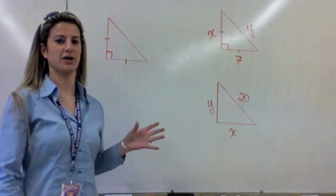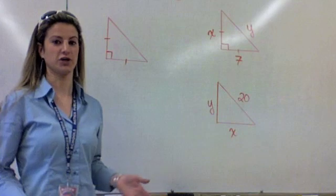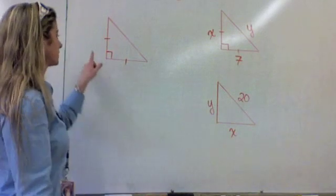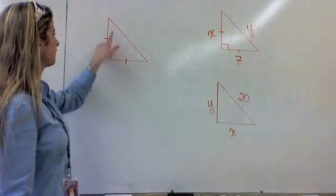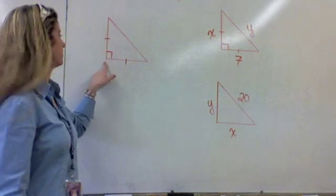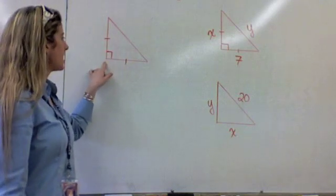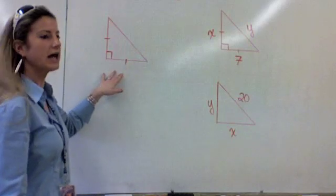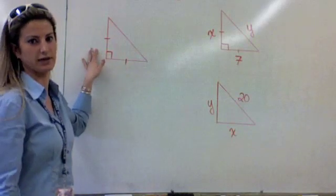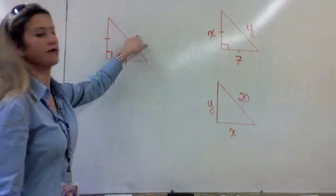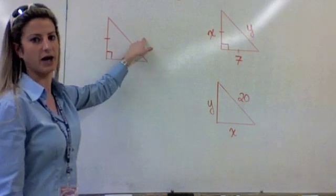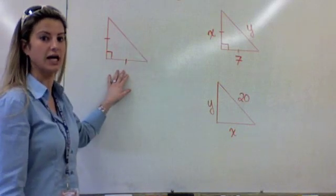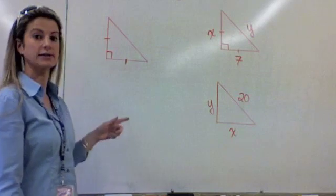Here's a little video to help you guys with the special right triangle tricks that we talked about in class. So here is a 45-45-90 right triangle, and we talked about tricks — how to know if I gave you one of the legs, how to find the other leg (that's easy, it's the same), and how to find the hypotenuse, or if I gave you the hypotenuse, how to go back to a leg. So let's just talk about the quick tricks.